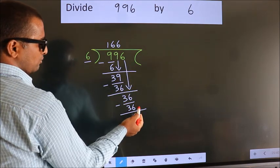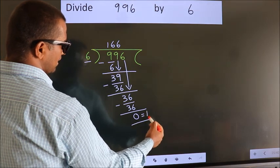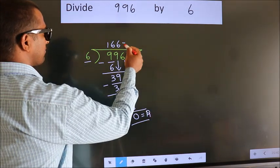No more numbers to bring it down. So we stop here. This is our remainder. This is our quotient.